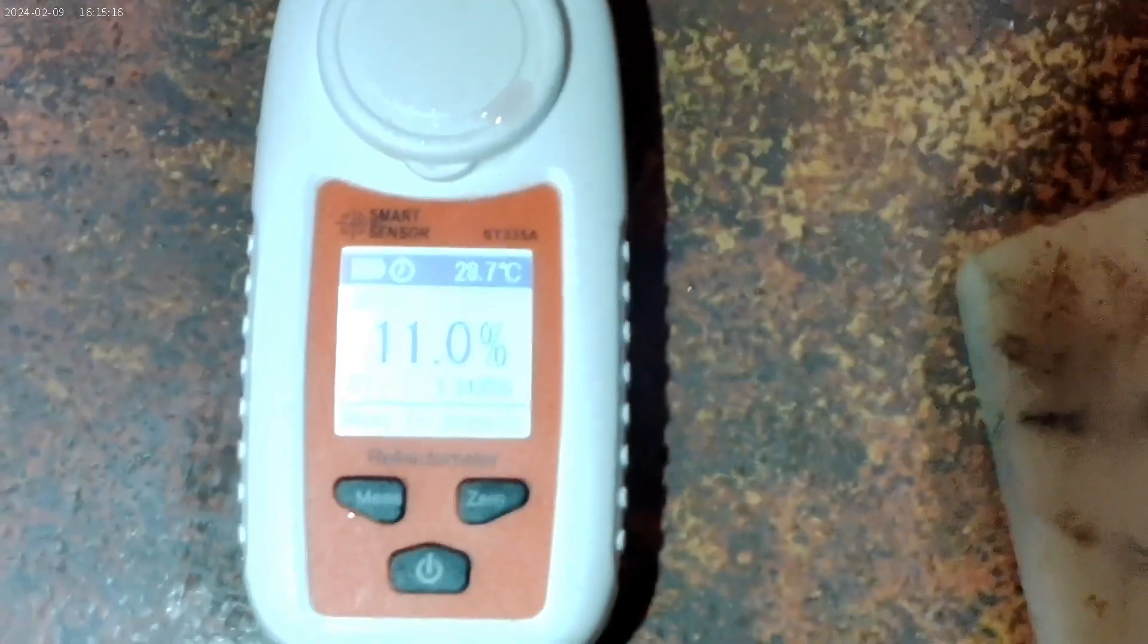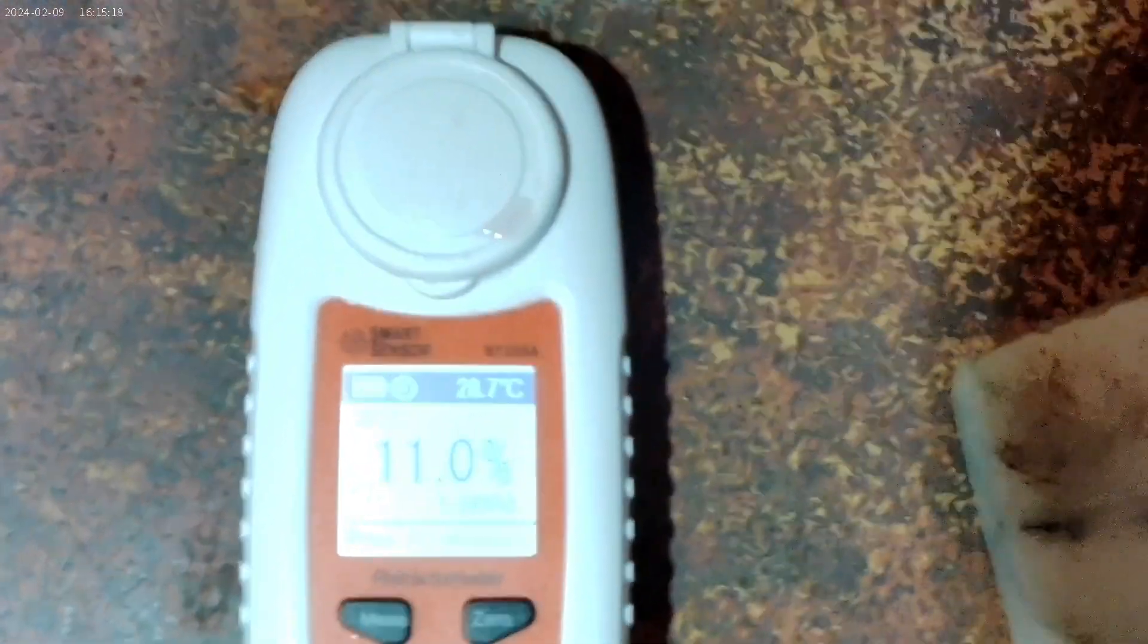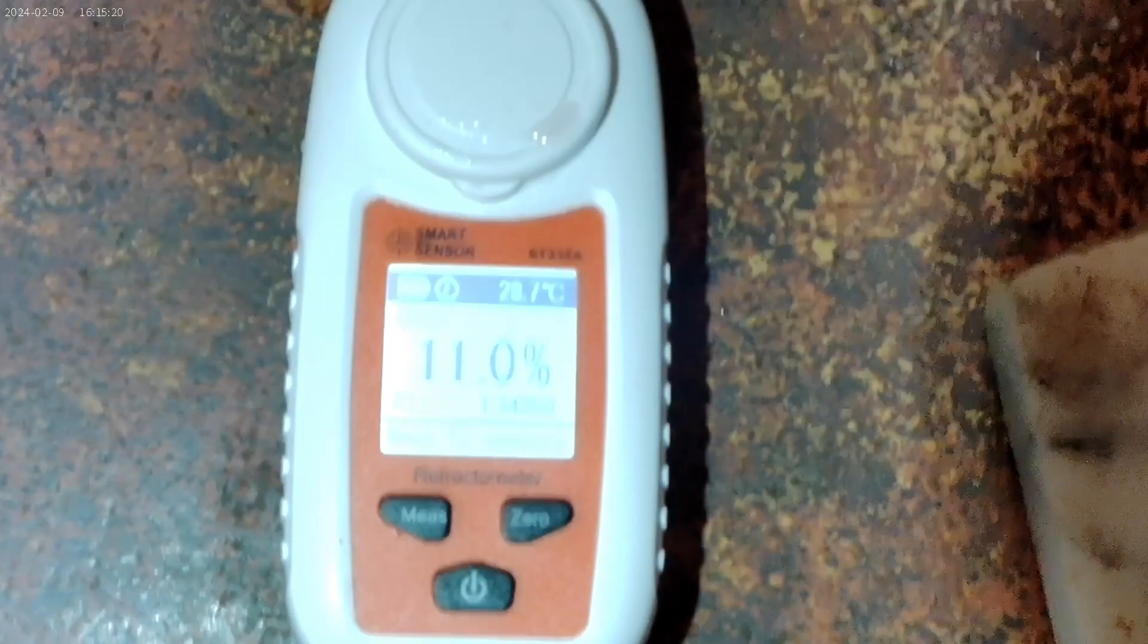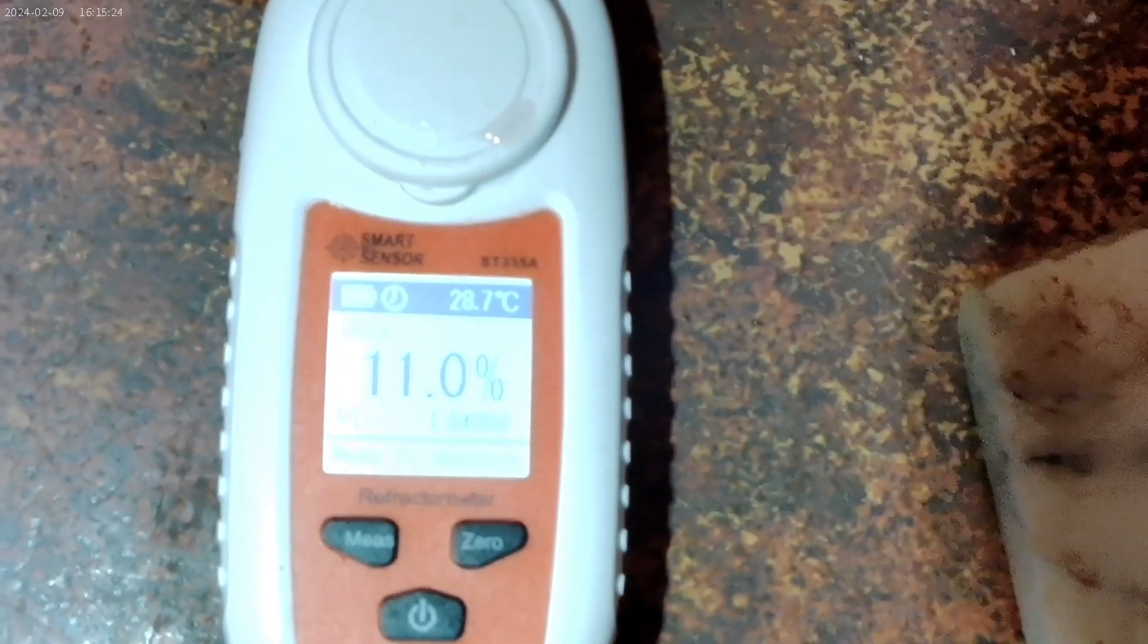I'll test the soluble solids. The 11% soluble solids is considerably less than the 13.5 I got for the floracane crop.